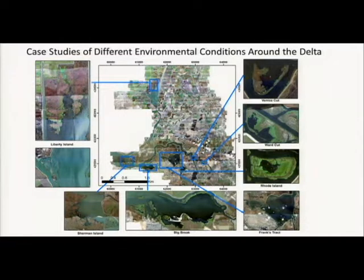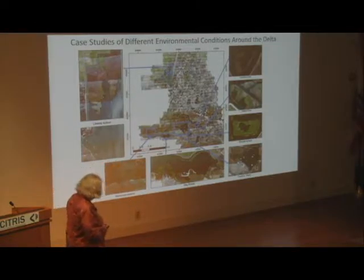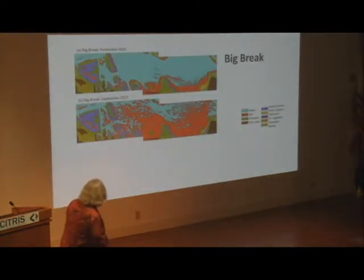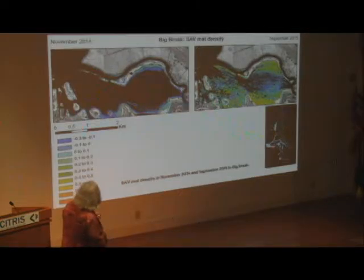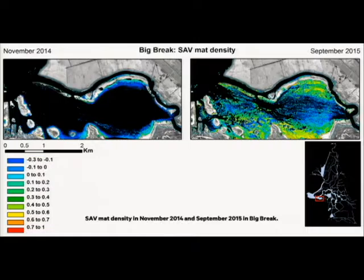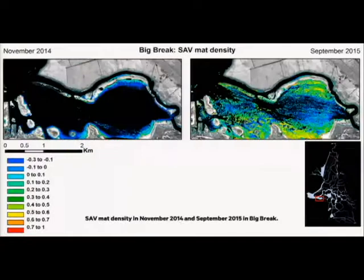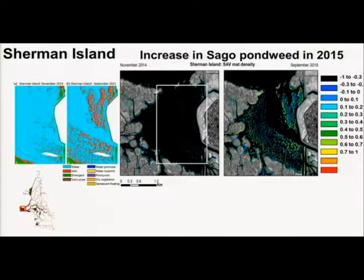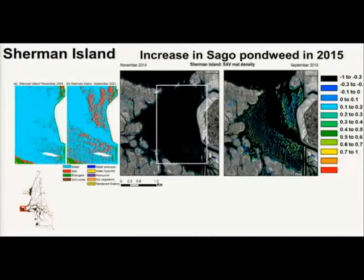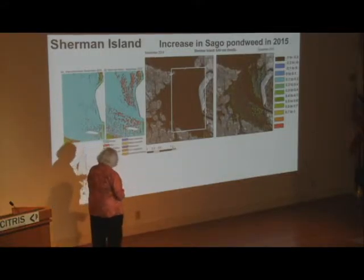Big Break is over here, and Sherman Island—there are people at Davis working on Sherman Island including Dennis Baldocchi and others in the ESPM department. Sherman Island's pattern is a little different from most: most of the vegetation this year was the submerged species. One area is actually a different species from Egeria—a different growth form and way the little patches of vegetation grow—so you can distinguish it spectrally.